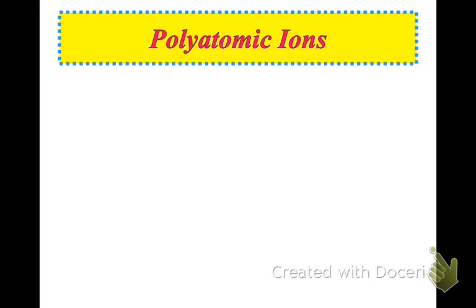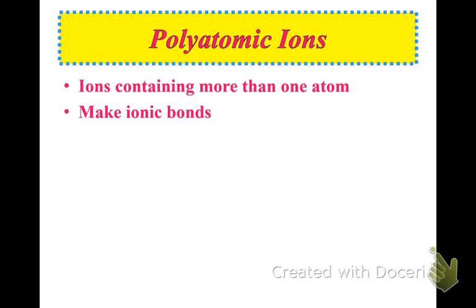Polyatomic ions are ions that contain more than one atom. They basically make ionic bonds, which we'll talk about more later. Basically they have charges, so this is a good indicator. Now, you're going to have charts, and some of you have seen that we've passed out polyatomic ion charts. You'll see these polyatomic ions, so they all have charges.